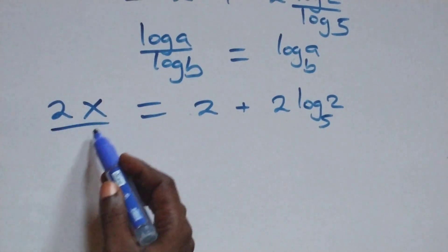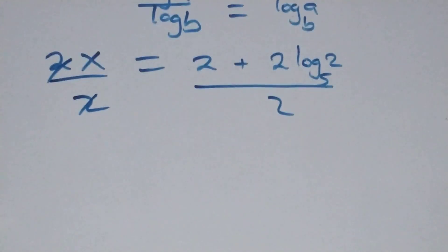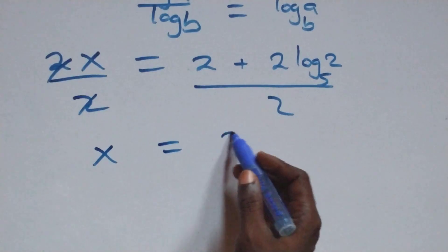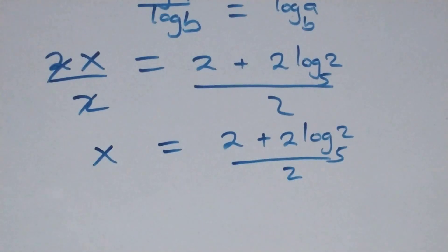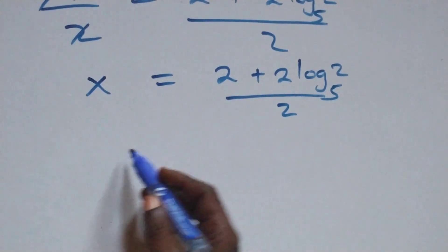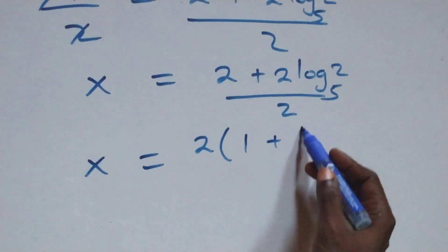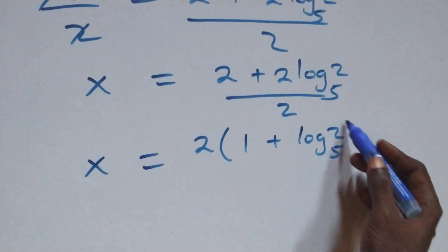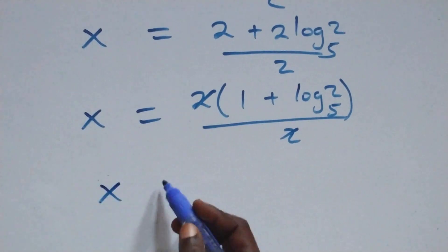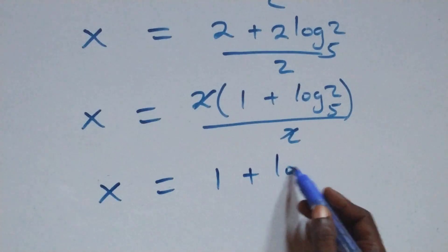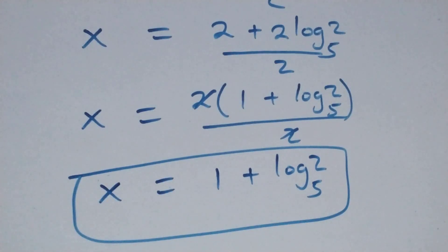We divide both sides by 2. The 2 on the left cancels, and we have x equals (2 plus 2 log₅2) all over 2. We can factor out 2 from the numerator: 2 times (1 plus log₅2) over 2. The 2s cancel, and all we have becomes x equals 1 plus log₅2. That is the value of x: 1 plus log₅2.